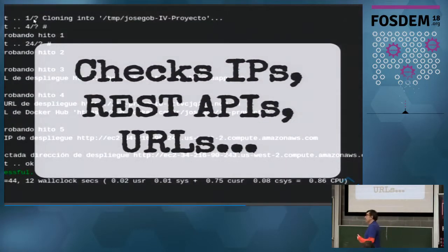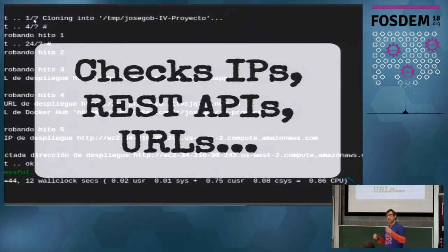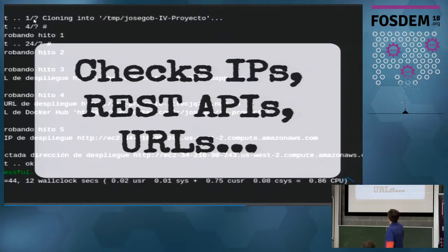I also have to check IPs, REST APIs, and URLs. They have to upload a Dockerfile to Docker Hub, so I check whether it's there, whether it's working, and whether it's been built. This is an actual log — you can see it cloning milestone one, milestone two, milestone three, with Amazon URLs, site.co URLs, and Heroku URLs all being checked.